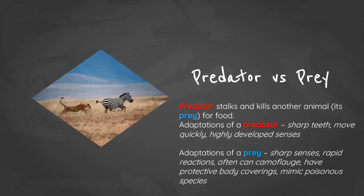In the predator versus prey relationship, the predator stalks and kills another animal, and the animal killed is the prey, typically for food. Predators tend to have sharp teeth, move very quickly, and have highly developed senses. Prey animals also tend to have sharp senses to detect danger quickly, rapid reactions, the ability to camouflage, protective body coverings, and may mimic poisonous species.